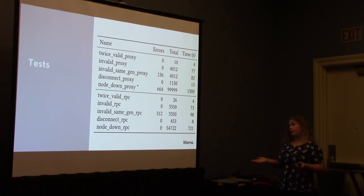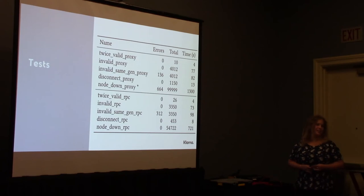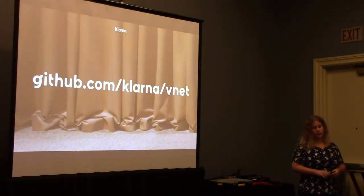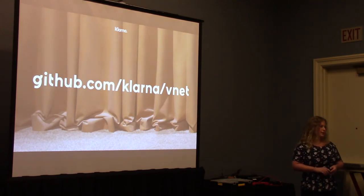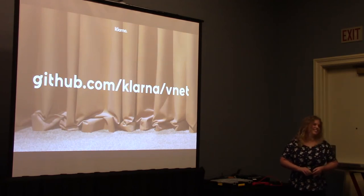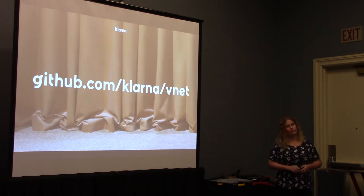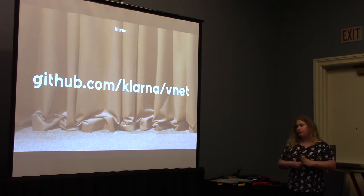We tested VNet with this toy example, but we also used VNet to test our bigger distributed model, and it really helped us discover concurrency bugs and give us bigger confidence. Our lesson learned was that it was a very good idea to do rapid prototyping and early verification. With VNet and ConcuerError, we have much higher confidence that our model will work in production. And since the test code and the production code is very close, we have a very short gap.